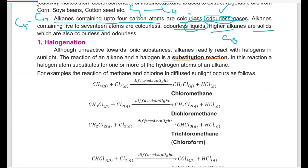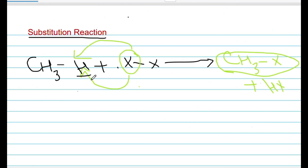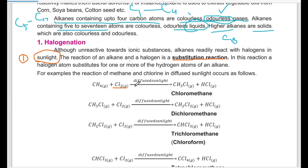Now, the actual halogenation reaction: alkanes react with halogens, but this reaction occurs in sunlight. This is the first and foremost condition — halogenation reaction happens in sunlight. The reaction of an alkane and halogen is known as a substitution reaction. In this reaction, a halogen atom substitutes one or more hydrogen atoms of an alkane. As the reaction continues, more hydrogen atoms will be replaced by halogen atoms.